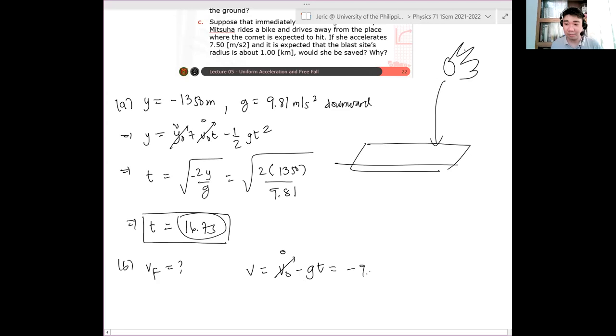So this will vanish. And we expect that this should be negative. So this is minus 9.81 meters per second squared multiplied by 16.7 seconds. And therefore, V equals negative 162.7 meters per second.